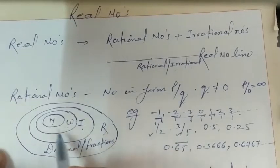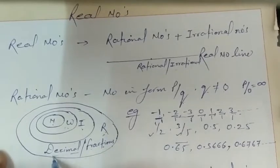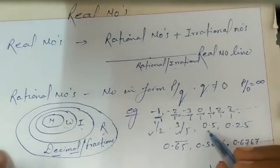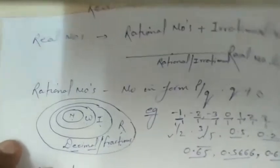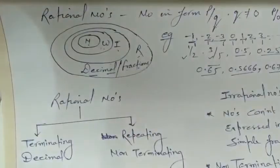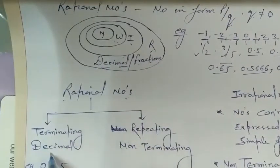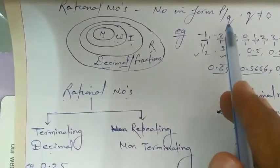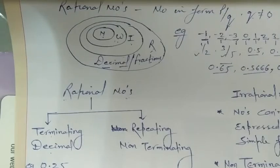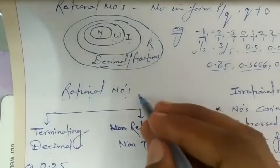In brief, all rational numbers include natural, whole, integers, decimal, and fractional numbers. Rational numbers in the form of P upon Q will always have terminating decimal expansion — meaning when you divide P by Q and get a decimal number, if that decimal is terminating or repeating non-terminating, then that will also be a rational number.